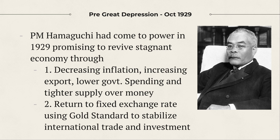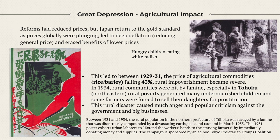Pre-Great Depression, Prime Minister Hamaguchi came to power promising to revise the stagnant economy prevalent during the 1920s — after the Great Kanto earthquake and the Showa financial crisis of 1927. He tried to decrease inflation by boosting exports, lowering government spending, tightening control on money, and returning to a fixed exchange rate using the gold standard to stabilize international trade and investment. The gold standard guarantees the value of the currency at its weight equivalent in gold.